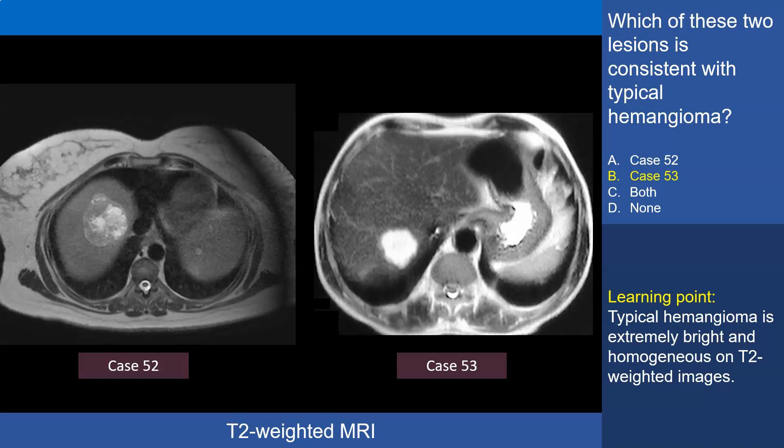The correct answer is case 53, which is a hemangioma. In case 53, you see the extreme hyperintensity and the extremely homogeneous nature of the lesion, in contradistinction to case 52, which shows heterogeneous signal intensity. Case 52 is a metastasis. The learning point is that typical hemangioma is extremely bright and extremely homogeneous on T2-weighted images.